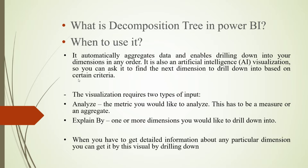For example, if we have data of sales and different products and product categories, we can use the decomposition tree to analyze the sales for those particular products and product subcategories. In this decomposition tree, we can take the sales and analyze them as per different dimensions like product category, product subcategory, and product names — and we can analyze according to artificial intelligence criteria.